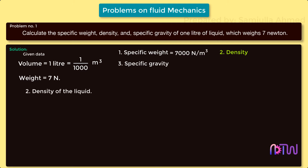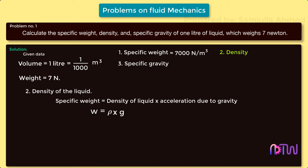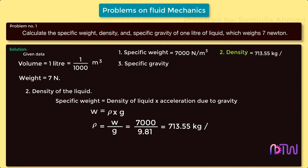Second, density of the liquid — we use the relationship: specific weight equals density into gravity, i.e., w = ρg. Rearranging, density ρ = w/g. Specific weight is 7000 N/m³ divided by g = 9.81 m/s². Therefore, density of the liquid is 713.55 kilograms per meter cube.